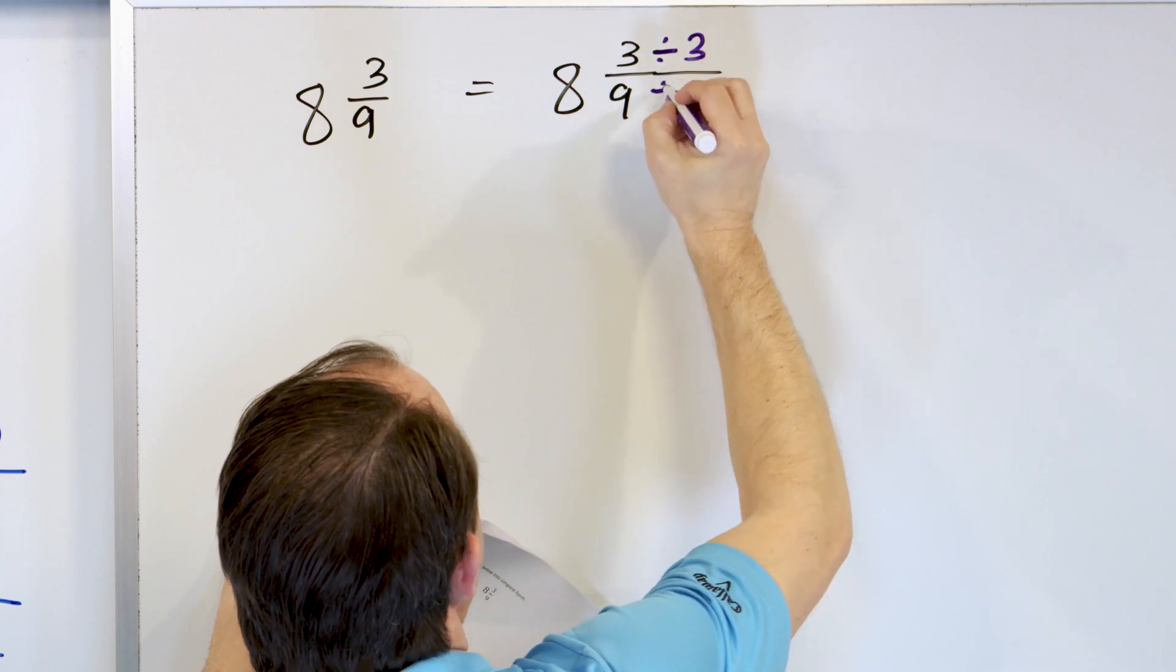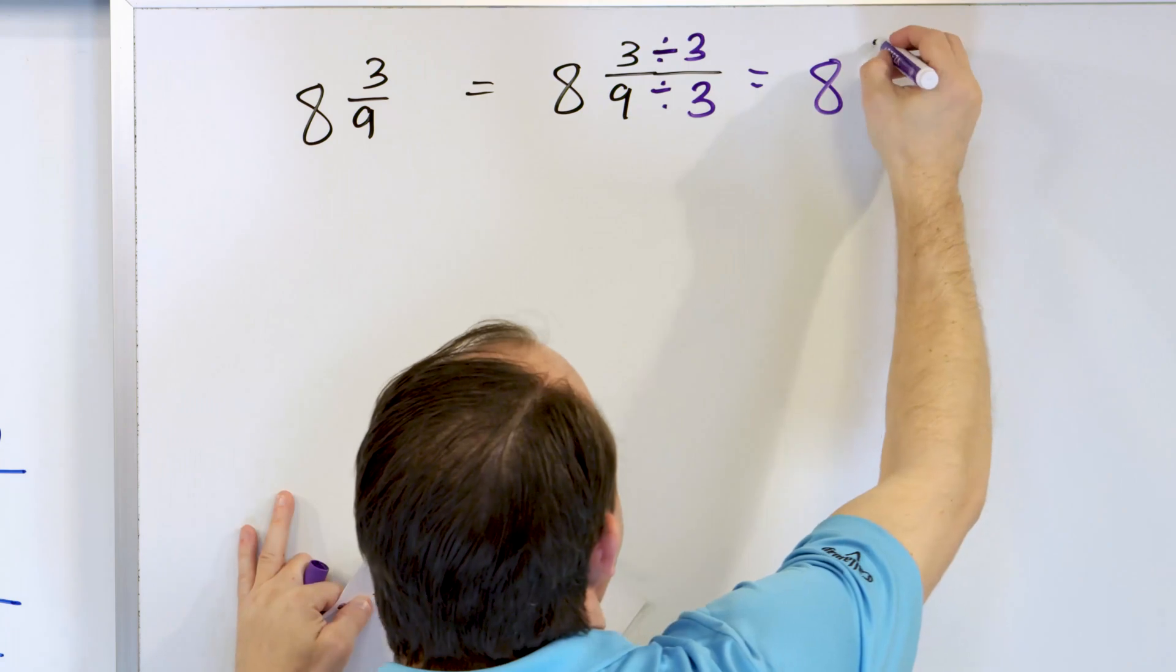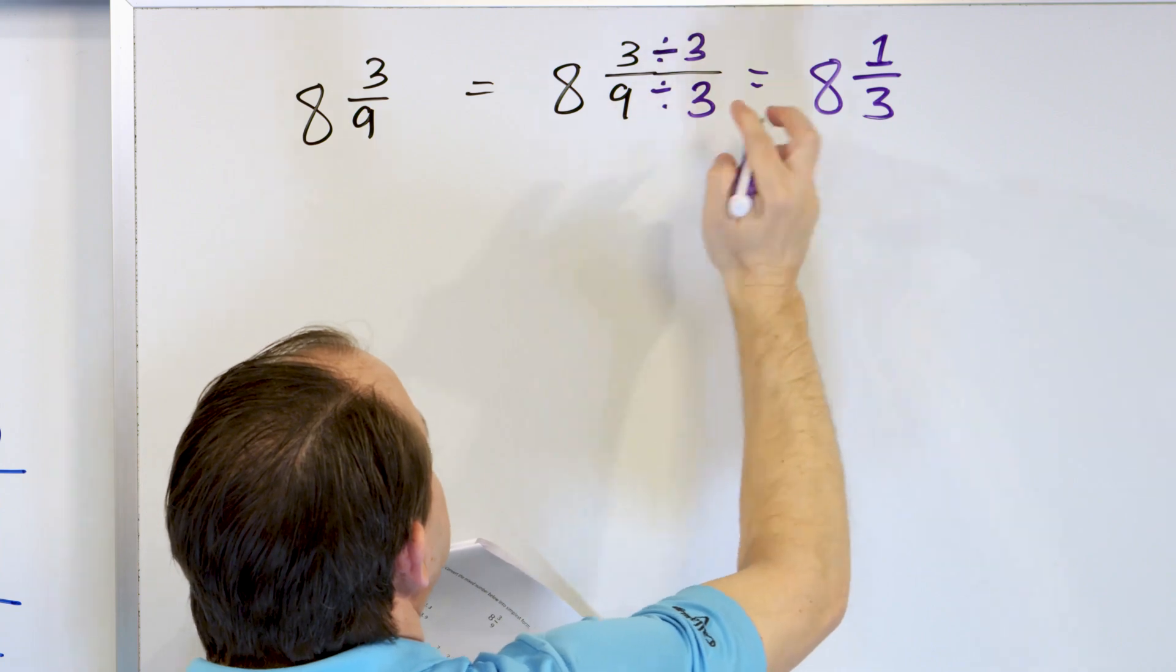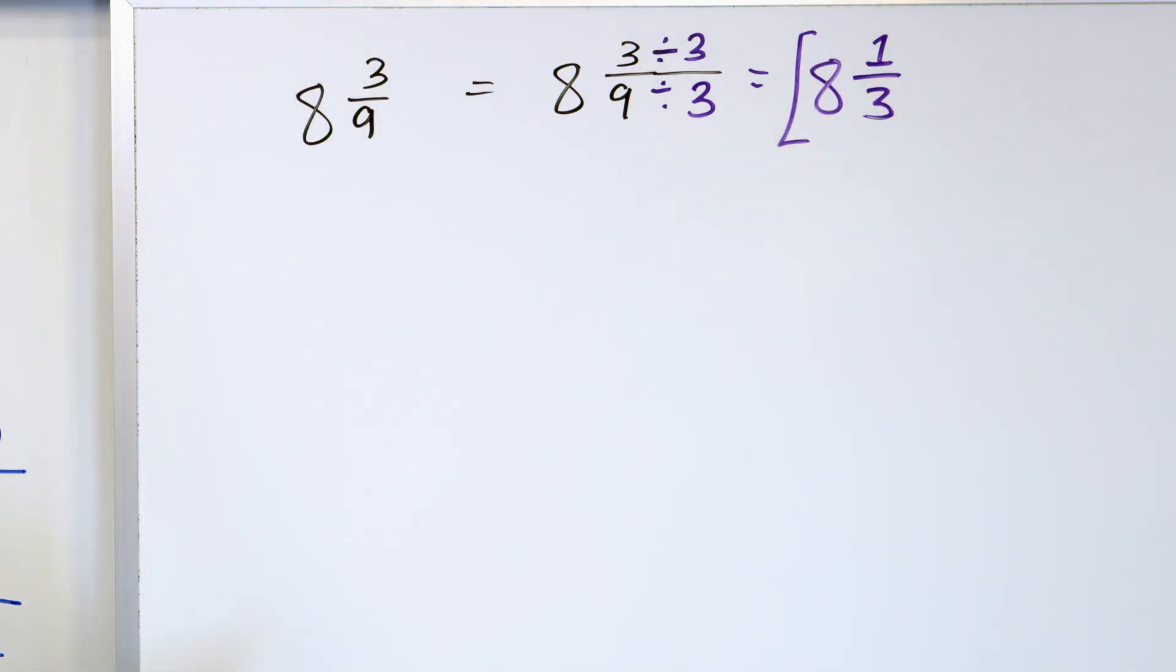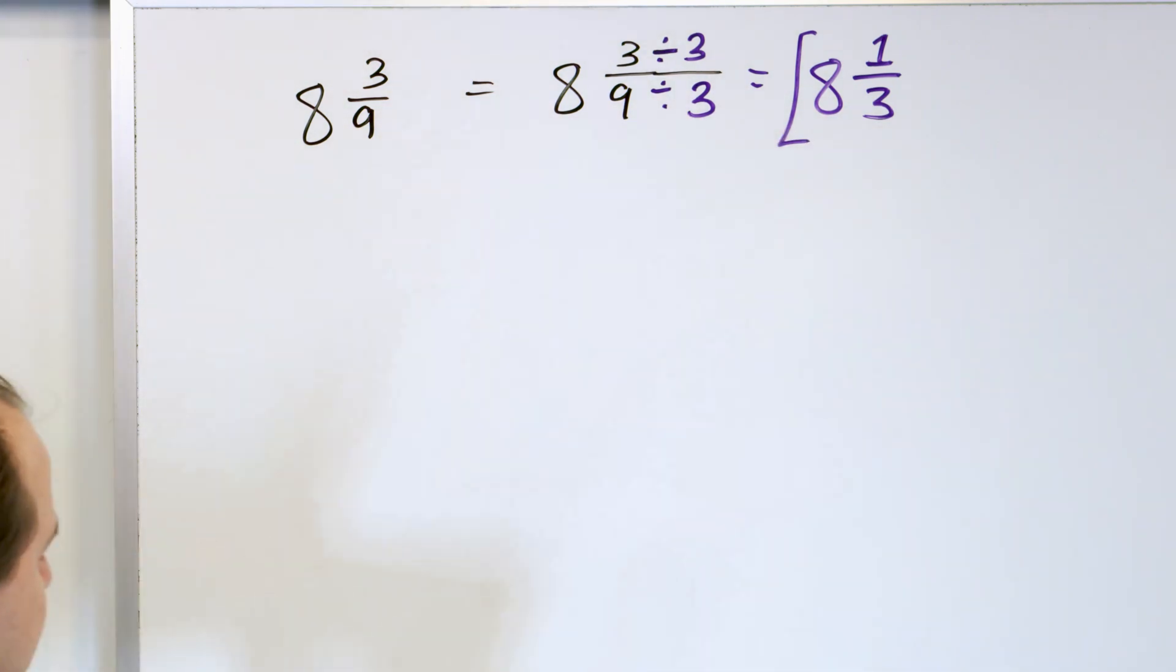So divide the top by 3, divide the bottom by 3, and we get a whole number of 8. 3 divided by 3 is 1, 9 divided by 3 is 3. So we get an answer of 8 and 1/3rd, and that's exactly the same. What we're doing here is we're just finding it in simplest form.